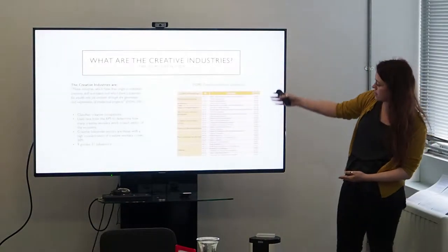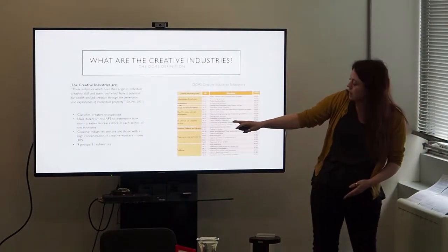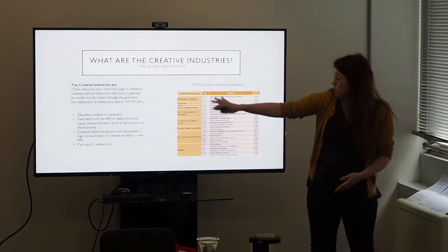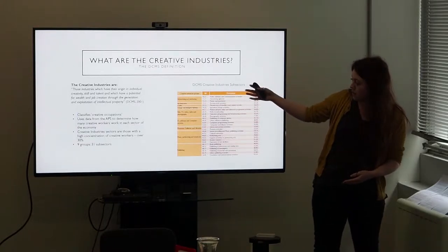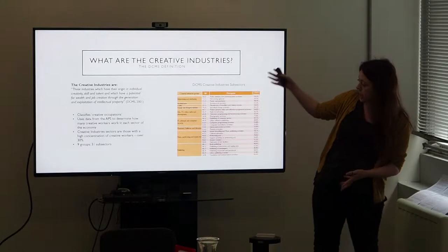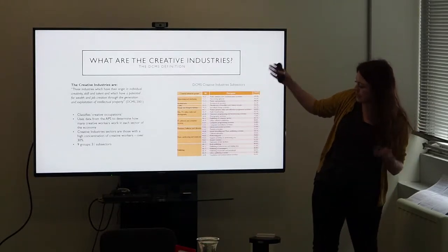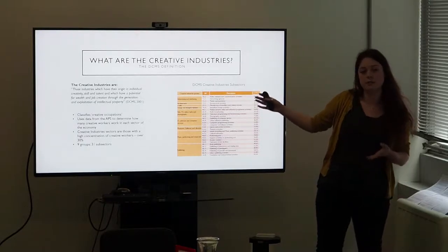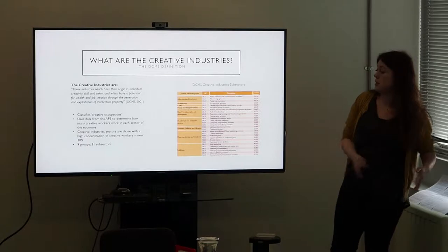So this is the list of subsectors, and they've been grouped into sort of major categories. So we have advertising and marketing, architecture, crafts, design and design of fashion, film, TV and radio, IT software and computer services, museums, galleries and libraries, music, performing and visual arts, and publishing. So that's sort of the breadth of the creative industries under this definition.